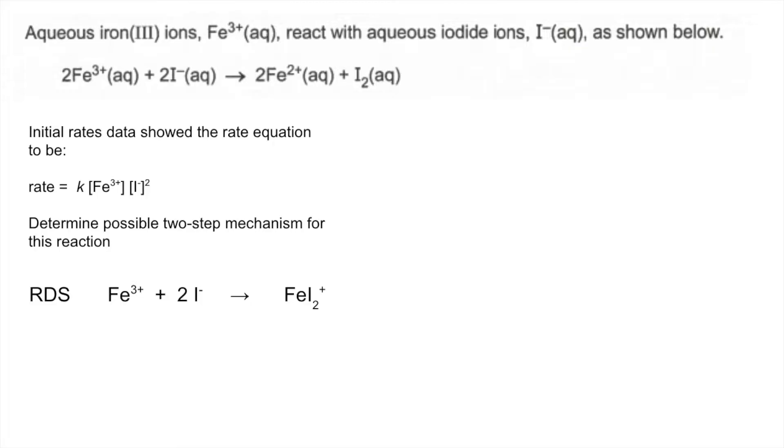FeI2+ is not in the overall equation so we need to get rid of that. We're going to bring it in as a reactant in step two and I'm going to react it with another mole of Fe3+ because in the overall equation we need two of those but we were only allowed one in the rate determining step.